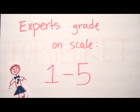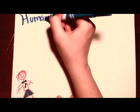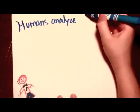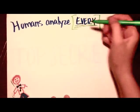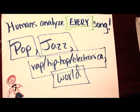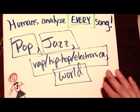The experts graded each attribute on a scale of 1 to 5 to aid in matching. There were four main categories that the experts classified the songs into. They were pop, jazz, rap, hip-hop, and electronica, and world music.